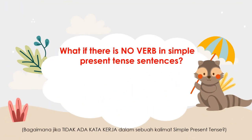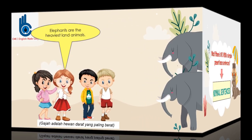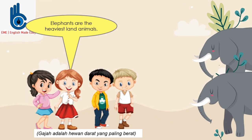We already saw how to make positive, negative, and question sentences for simple present tense. The question is, what if there is no verb in simple present tense sentences? We can also use what we call nominal sentences. Kalimat yang tidak mengandung kata kerja disebut sebagai nominal sentences. Mari kita lihat contohnya. Elephants are the heaviest land animals.